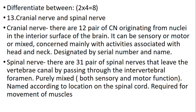Thirteenth question: differentiate between cranial and spinal nerves. Cranial nerves: there are 12 pairs of cranial nerves originating from nuclei on the inferior surface of the brain. They can be sensory, motor or mixed, and are concerned mainly with activities associated with the head and neck. They are designated by serial number and name. Spinal nerves: there are 31 pairs of spinal nerves that leave the vertebral canal by passing through the intervertebral foramina. They are purely mixed — both sensory and motor — and are named according to the location of the spinal cord segment.